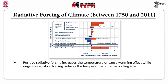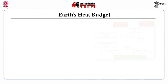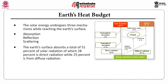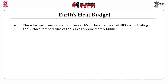Negative radiative forcing reduces the temperature or causes a cooling effect, and it is related to Earth's energy budget. Solar energy undergoes three mechanisms while reaching the Earth's surface: absorption, reflection, and scattering. The Earth's surface absorbs a total of 51% of solar radiation, of which 28% is direct radiation and 25% is from diffuse radiation. The albedo of Earth is 30%, which includes 20% from cloud reflection, 6% from scattering and 4% from surface reflection. The solar spectrum incident on the Earth's surface has a peak at 483 nanometers, indicating the surface temperature of the Sun as approximately 6,000 Kelvin.